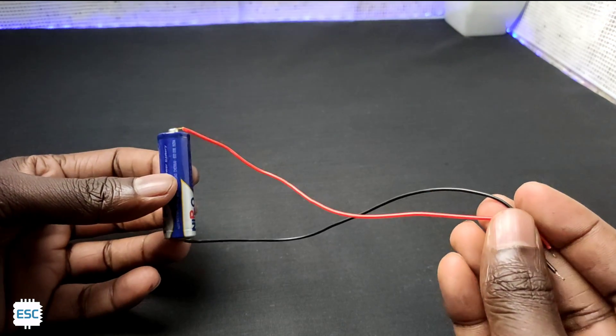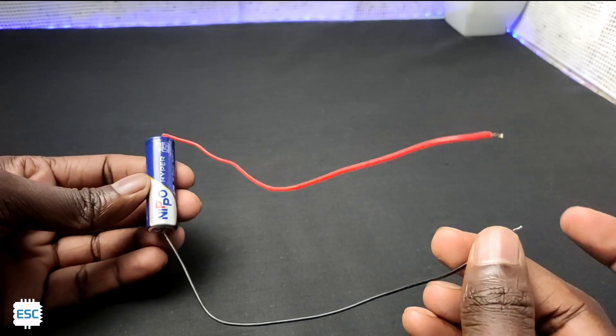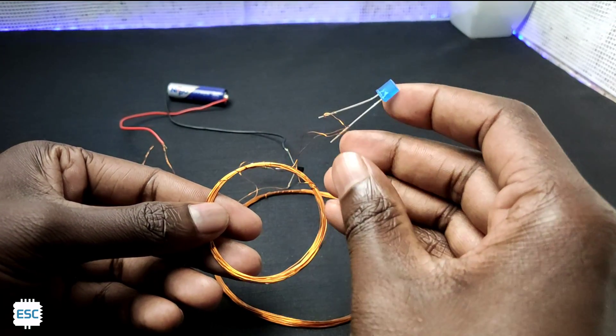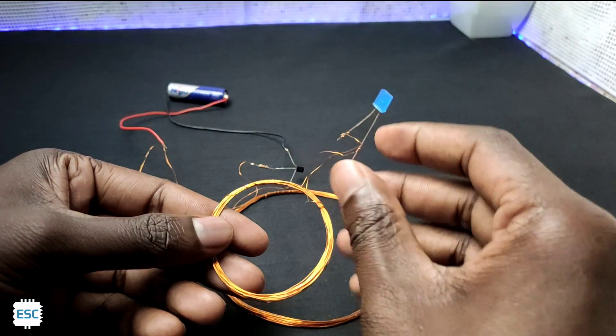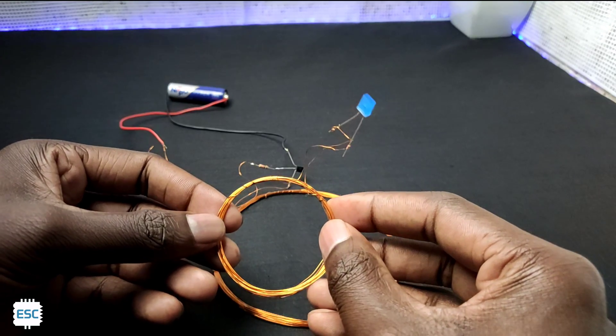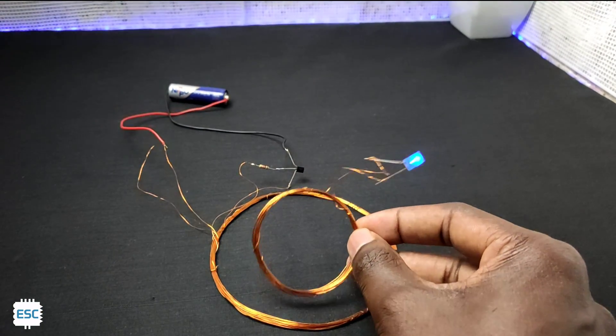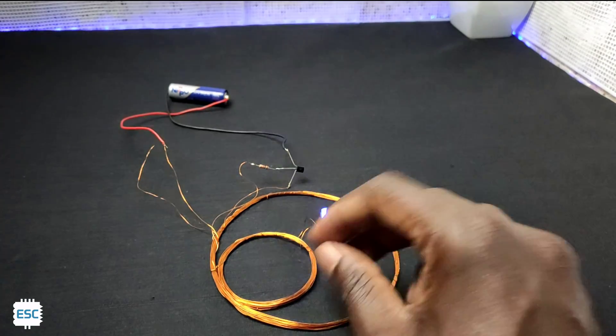Here I am using a 1.5V battery to power the oscillator circuit. After connecting that I made another coil consisting of 13 turns and I connected an LED to its end. Now let's test the circuit. And now you can see the LED is glowing so the circuit is perfect.